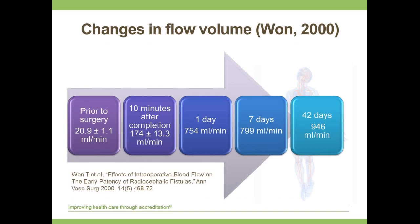A study from Korea looked at 50 radiocephalic fistulas constructed in 41 patients, followed until fistula failure or three months after onset of hemodialysis. Prior to surgery, the average radial flow volume was 21 mL/min. Just 10 minutes after completion of the anastomosis, it was up to 174 mL/min. Even more impressively, by just one day post-anastomosis, flow had already reached 754 mL/min — suggesting that conventional duplex ultrasound could be used to predict maturation as early as one day after creation. By 42 days, flow reached 946 mL/min.